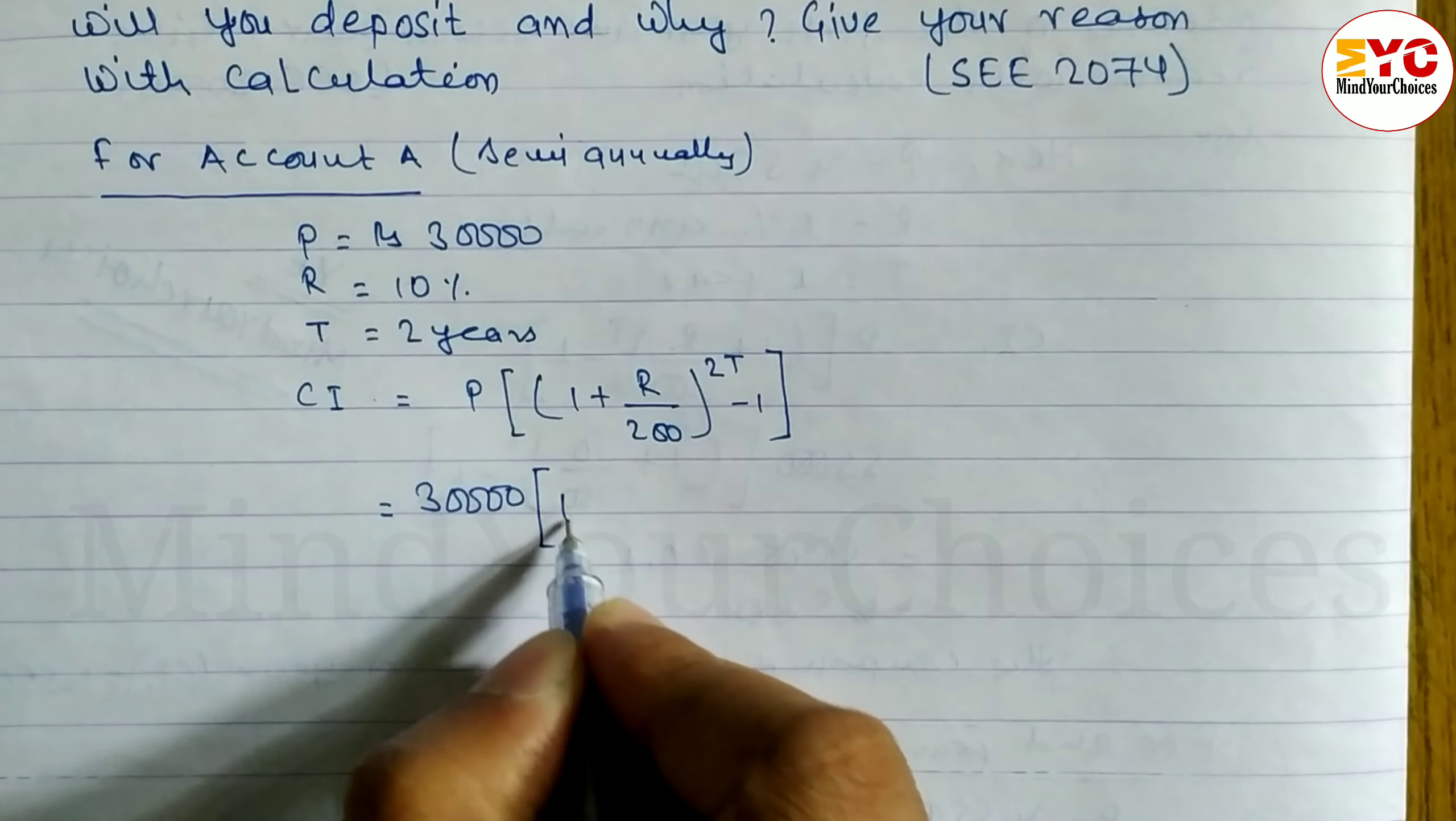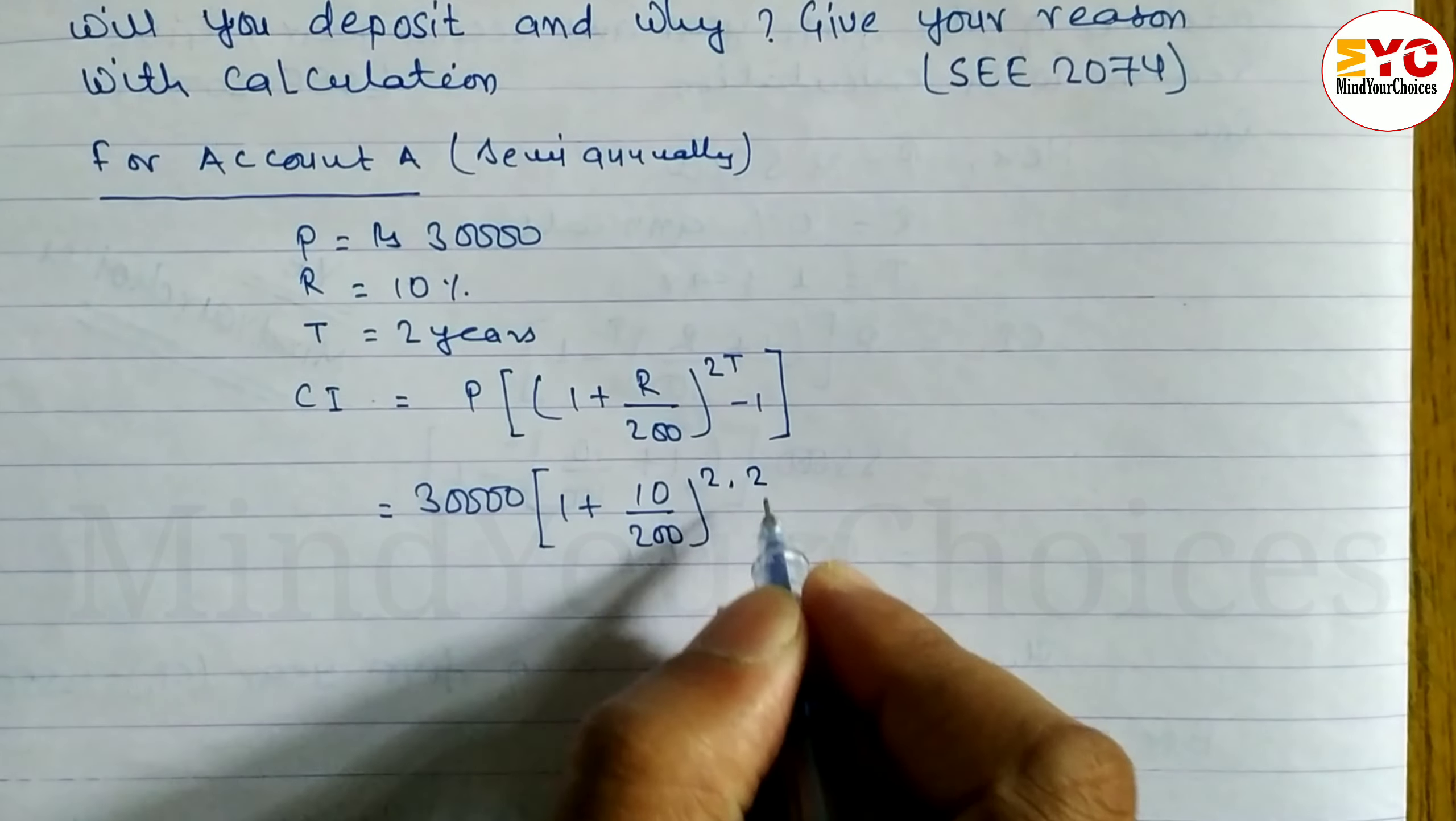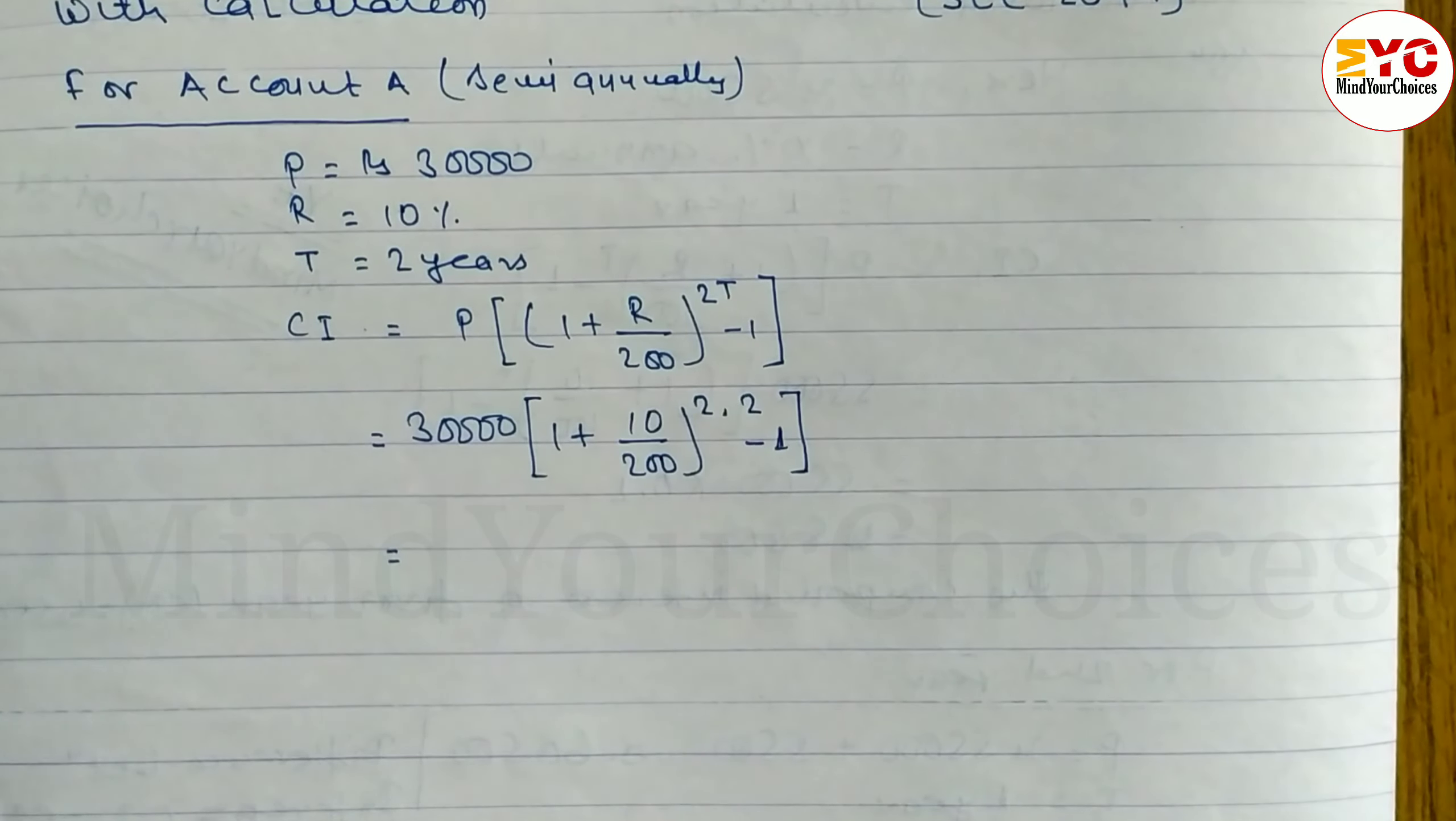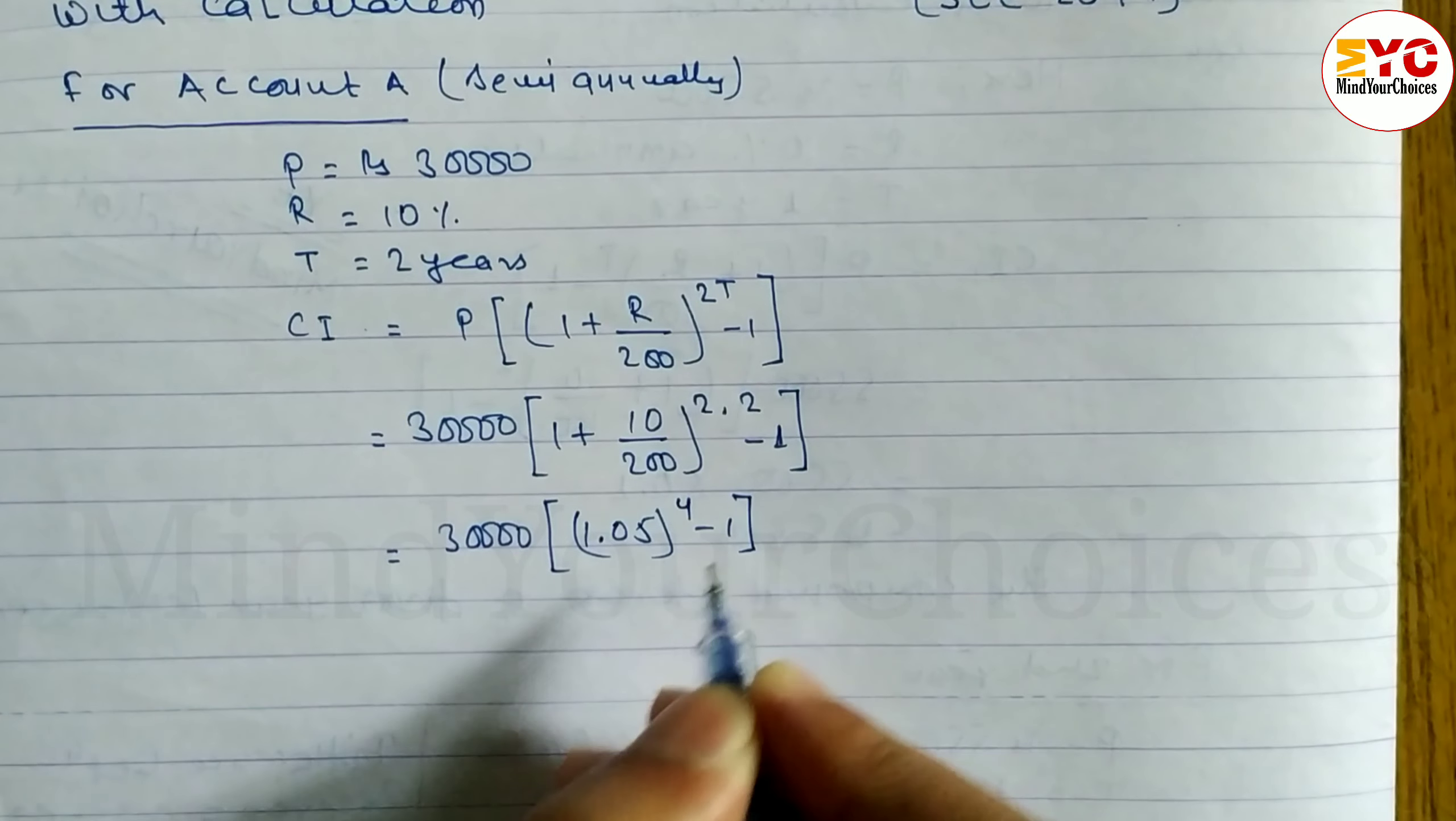Now put the value and find out compound interest. So 30,000 here, 1 plus R, R by 10, 10 by 200 power 2 into T, T by 2, minus 1. Calculate and put the value. So here it is 30,000 times 1.05 power 4 minus 1.